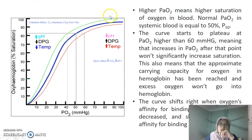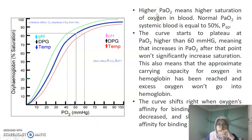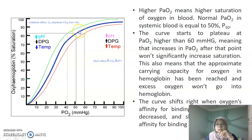The dissociation curve has the y-axis showing oxyhemoglobin saturation and the x-axis showing the partial pressure of oxygen. Higher partial pressure means higher saturation of oxygen in blood, and the normal partial pressure is the P50. The plateau of the curve is at P60, which is the maximum point — anything exceeding this won't significantly increase saturation, meaning the carrying capacity of hemoglobin has been reached and no additional oxygen will bind.